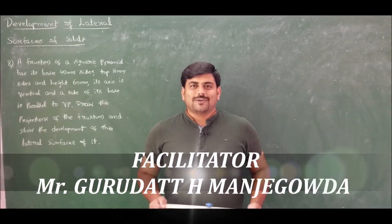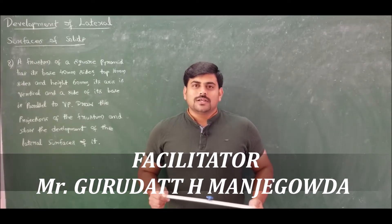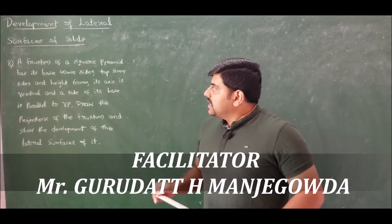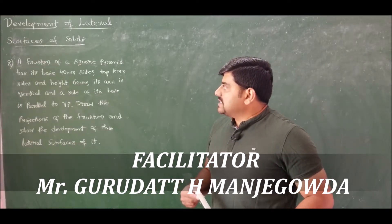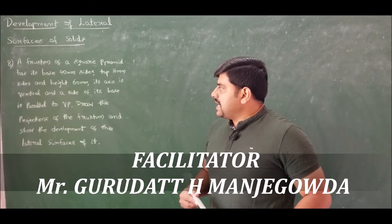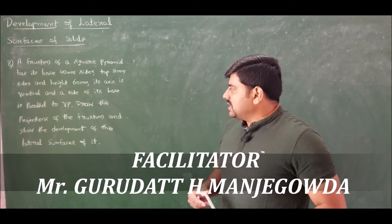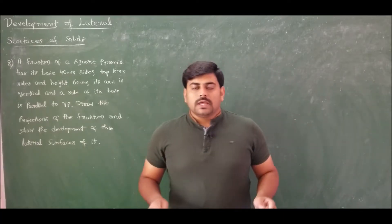Welcome, dear learners, to this course on engineering graphics. In module 4, we are discussing the development of lateral surfaces of solids. We have solved seven problems so far. Problem number 8 states that a frustum of a square pyramid has its base 40 mm sides, top 16 mm sides, and height 60 mm. Its axis is vertical and a side of its base is parallel to VP. Draw the projection of the frustum and show the development of its lateral surface.